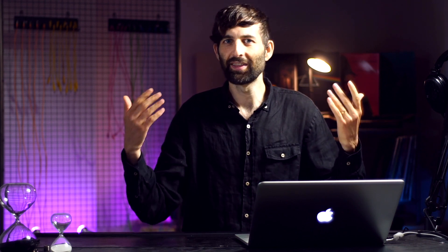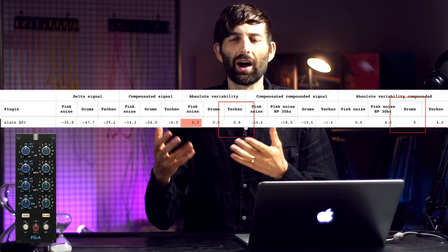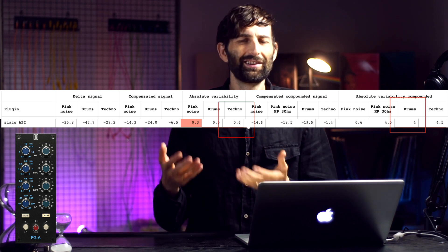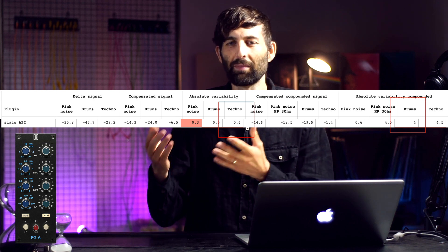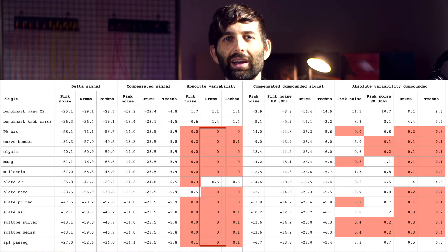Before we talk about the technical details, let's just look at the results. The only plugin that did anything remotely interesting in terms of non-linearity was the Slate API-type EQ. That did something — some unspecified thing was happening there. I don't know if it sounds good or bad; I have no opinion on what it's actually doing to the sound, but it seems to be the only plugin doing anything non-linear.